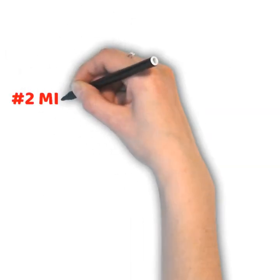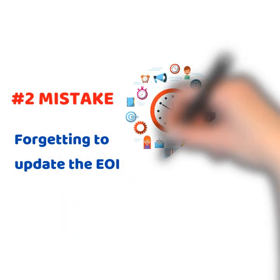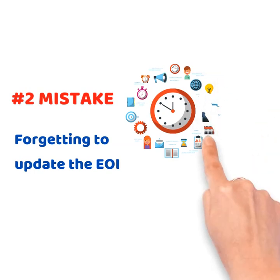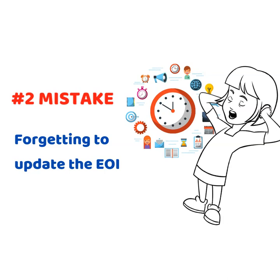The second mistake: forgetting to update the EOI. Remember that the invitation is issued by immigration based on the claims that you made. Without updating — say, for example, your improved English level — you might miss out on invitation rounds. In the same way, if you fail to update that you have married or started a de facto relationship, and then an invitation was issued based on your previous claims and you still proceed with your visa application, your visa application is likely to be refused, as your score would be lower than the invitation score.